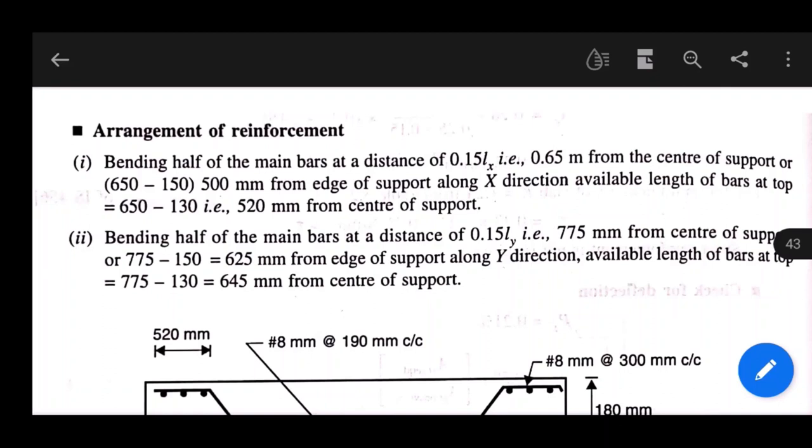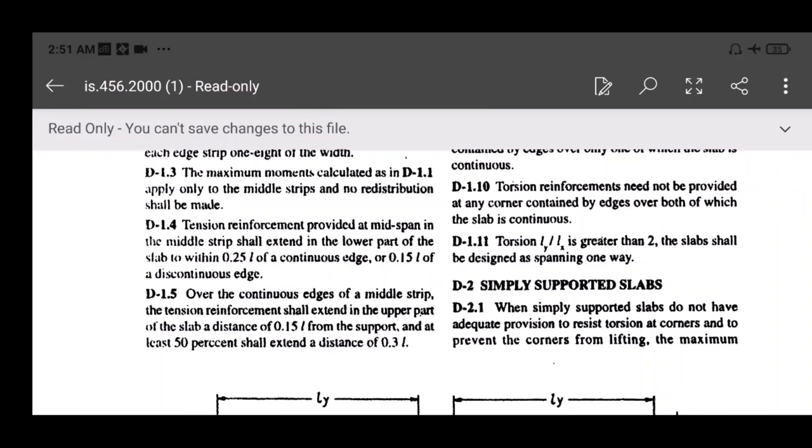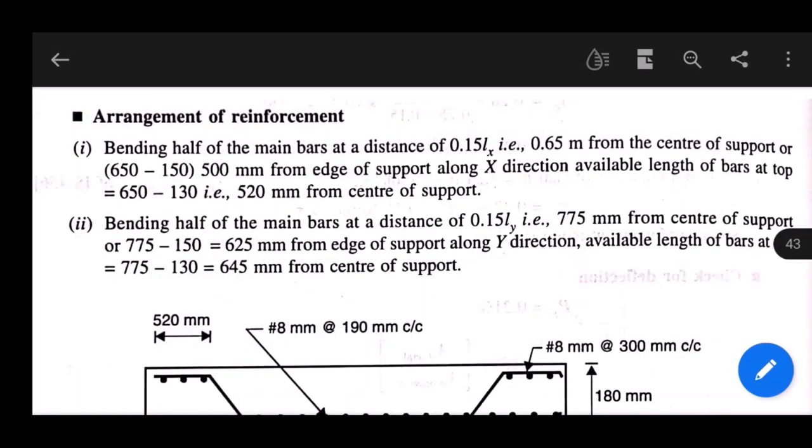Before starting arrangement, check the IS code provision. As per IS 456:2000 Annex D clause D-1.4, tension reinforcement provided at mid-span in middle strip shall extend in the lower part of the slab to within 0.25 l of a continuous edge or 0.15 l of a discontinuous edge, depending on edge condition.